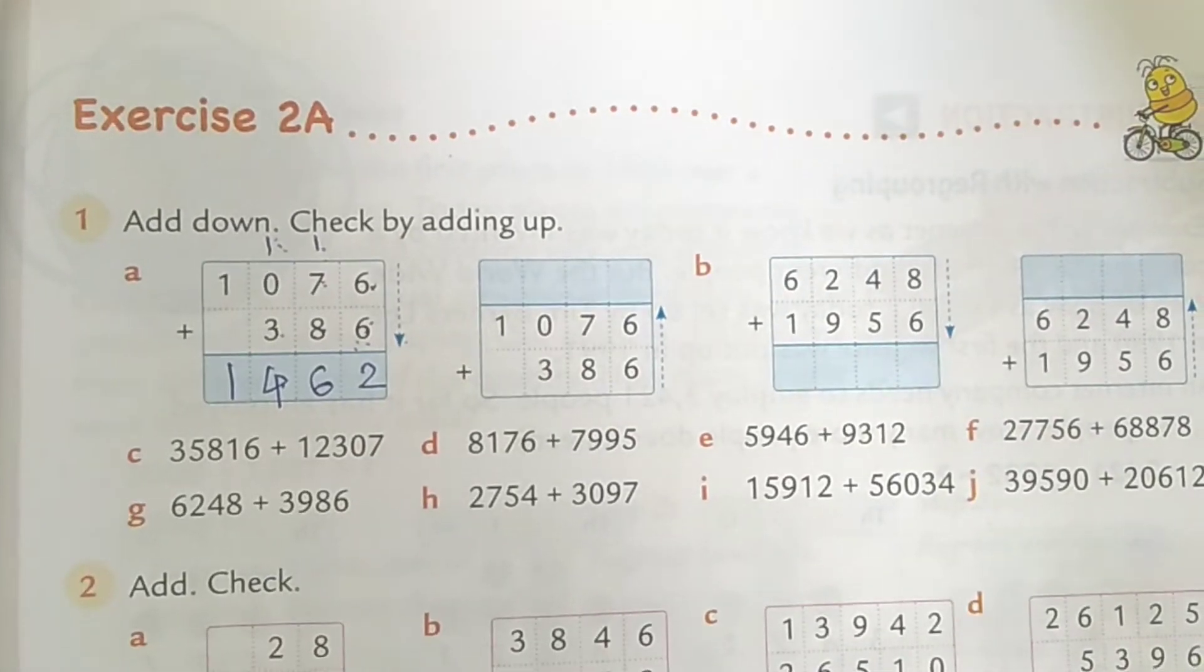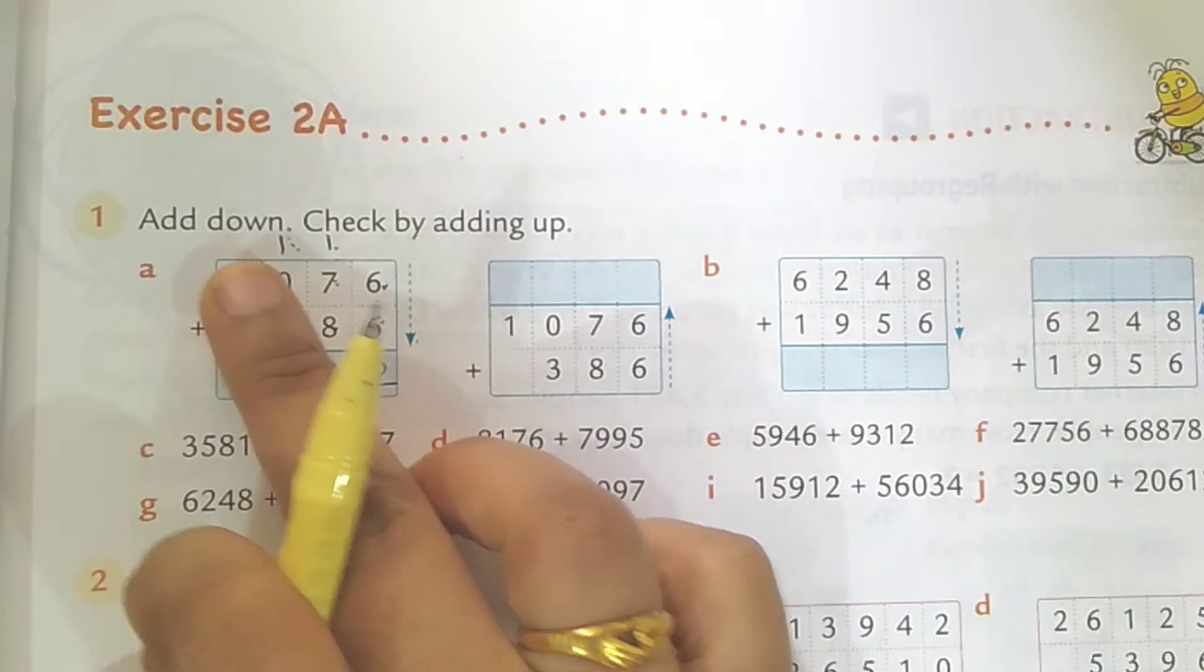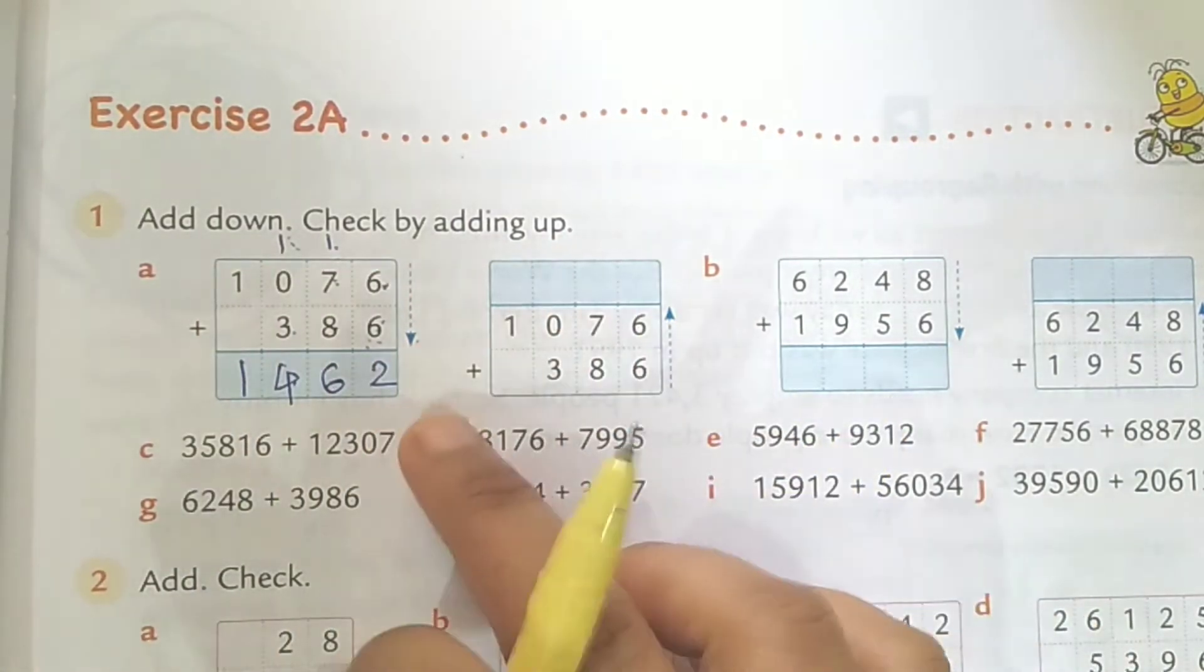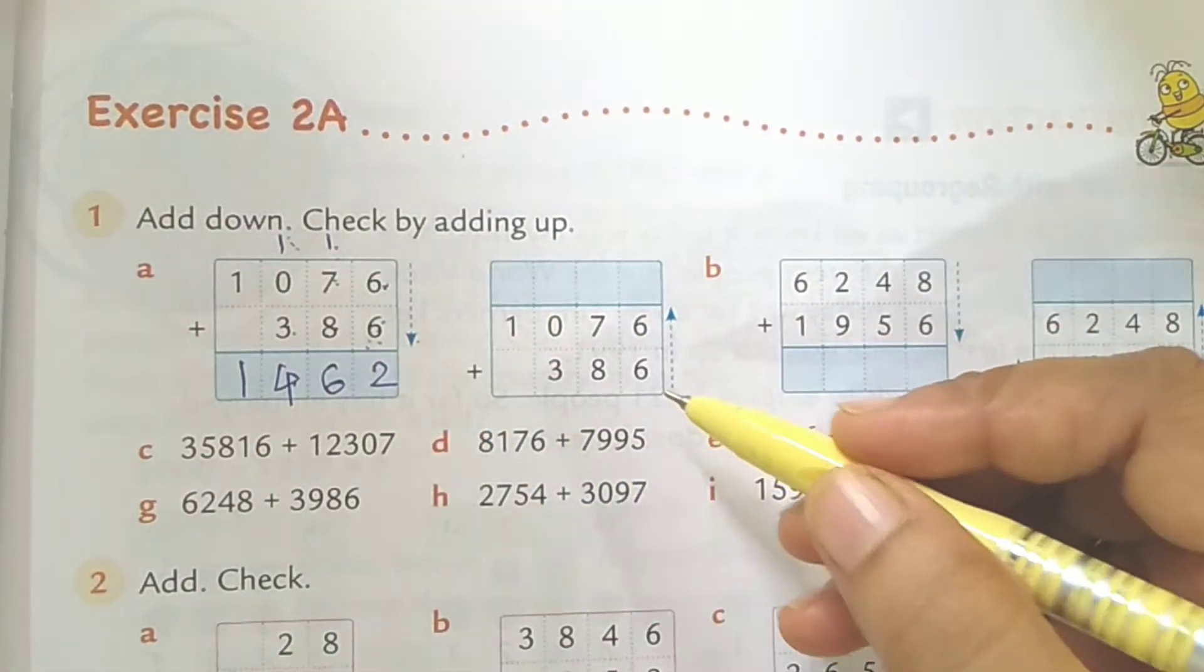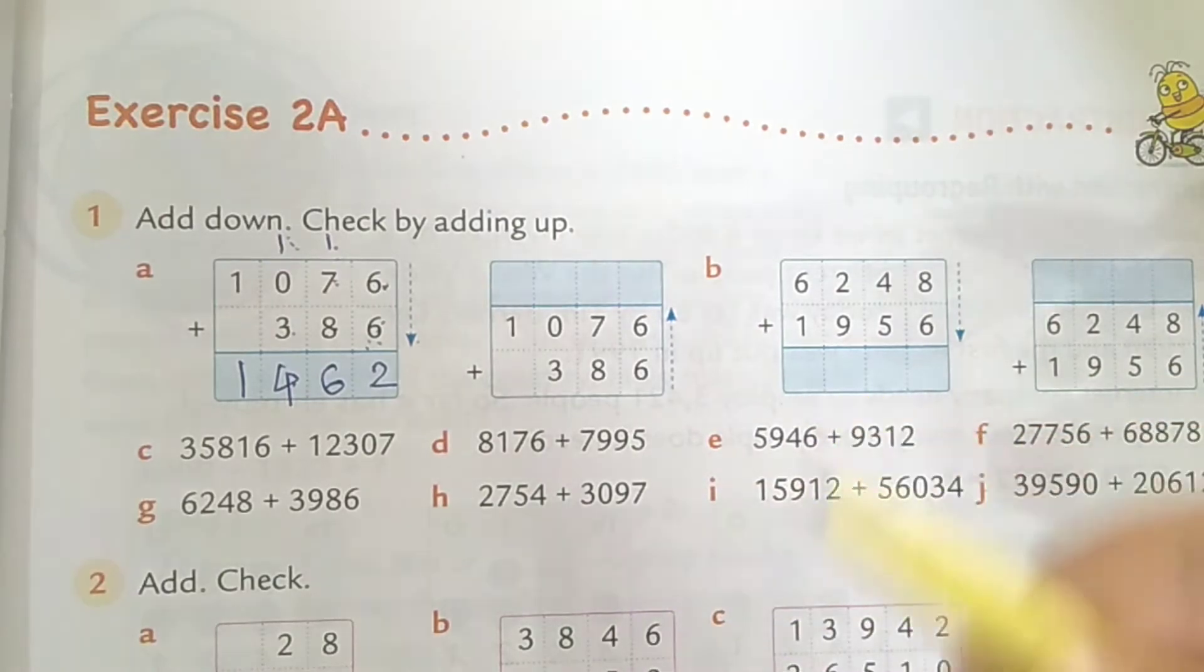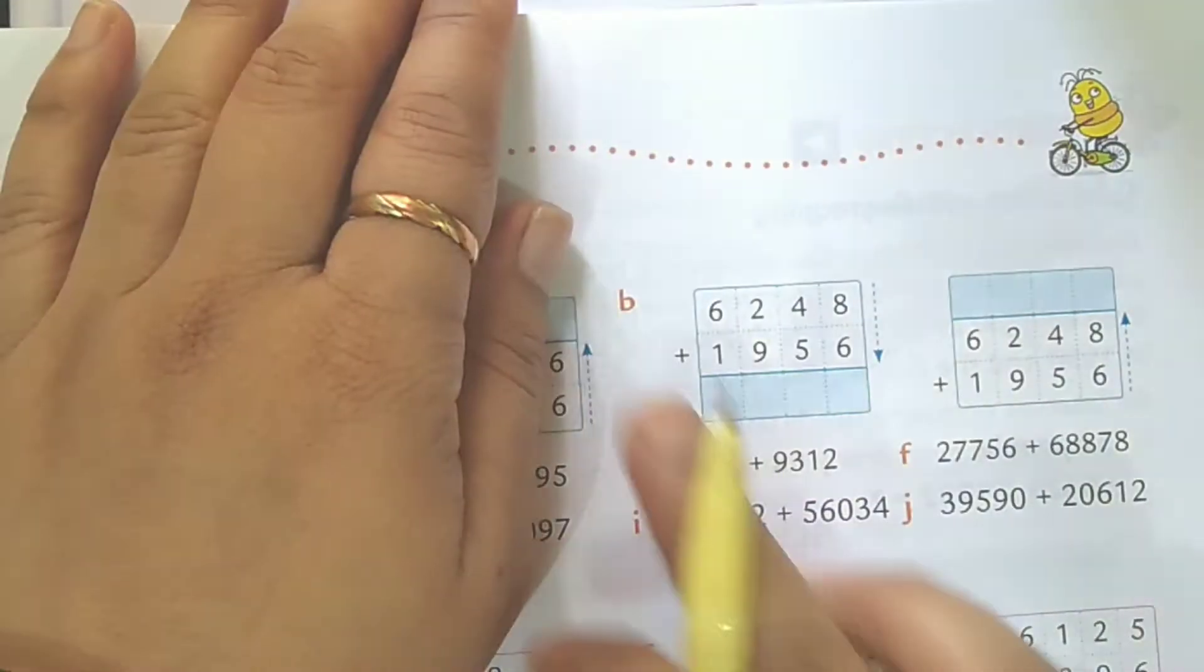Hello students, welcome. In the previous lecture we learned some addition strategies. On the basis of that, now you can solve addition problems easily. So let's start Exercise 2A. Students, let's solve Exercise 2A. Add down, check by adding up, means first you have to add down and then check by adding up.